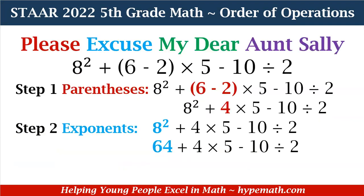So let's look at an example of how we apply PEMDAS. Our expression is 8 squared plus, in parentheses, 6 minus 2, times 5, minus 10 divided by 2. Our first step is parentheses: 6 minus 2 equals 4. Next, we have our exponents — 8 squared is 8 times 8, which equals 64.